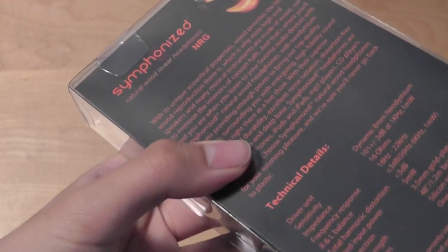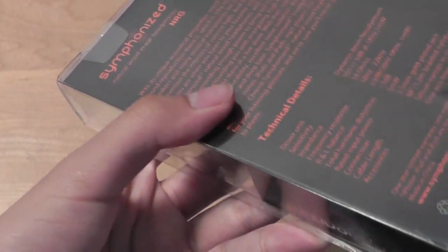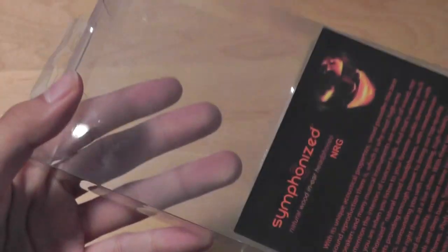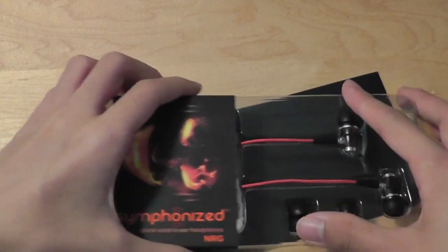The company also has several different color schemes that you can select through. This is just one of the versions that we have here for review purposes. You can also find the products directly through Symphonize's website, and not necessarily through Amazon.